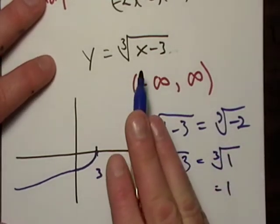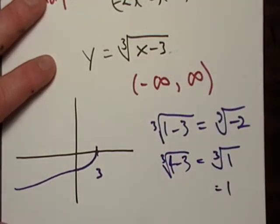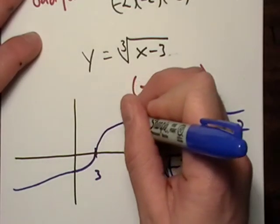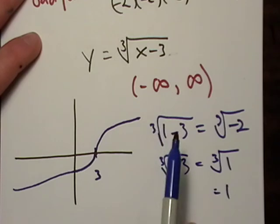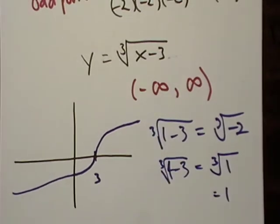And if I put 50 minus 3, I get 47. So I can take the cube root of 47. So you can see that eventually, you know, the numbers get bigger and bigger, but they're always positive. And that's an easy way to graph one of these functions too.